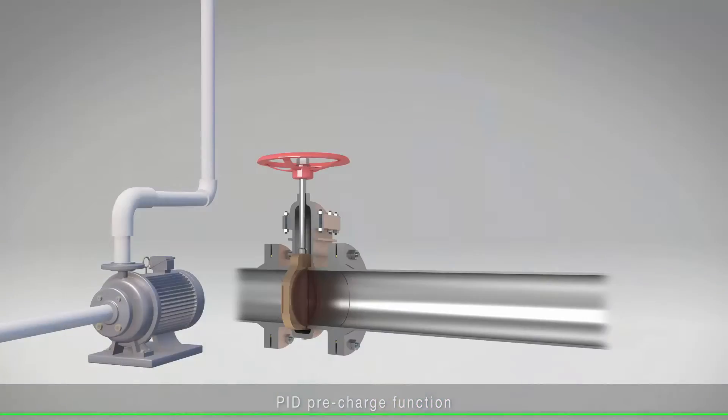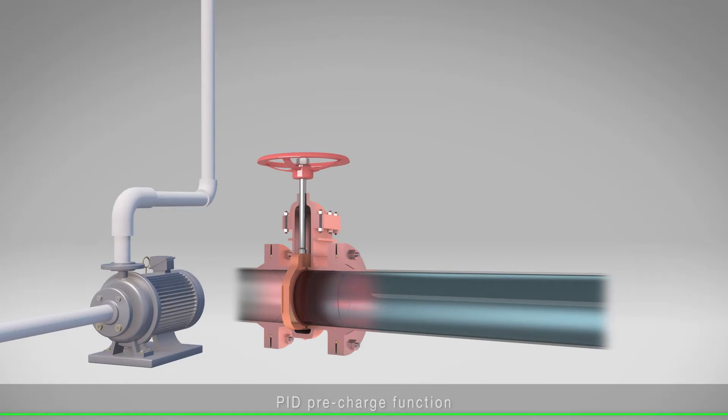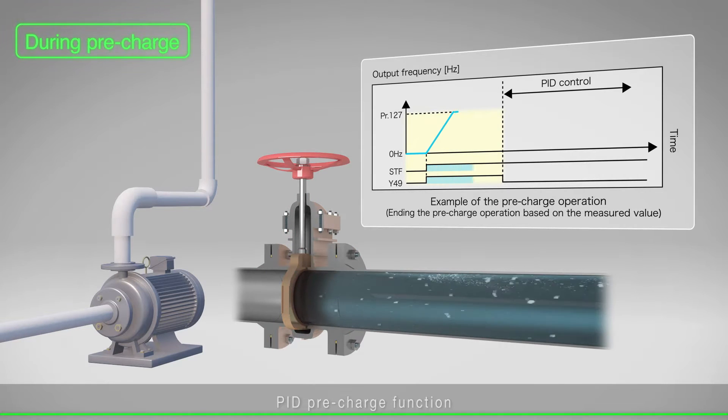With the PID pre-charge function, water supply to the empty pipe is started. Rapid acceleration and deceleration of the pump can be avoided to prevent water hammer action.